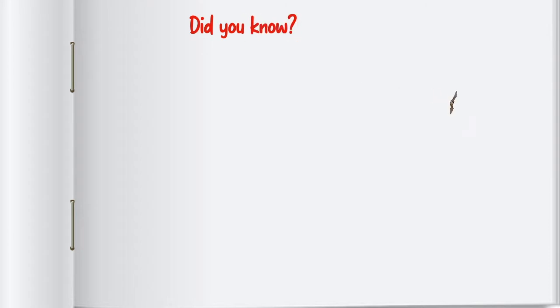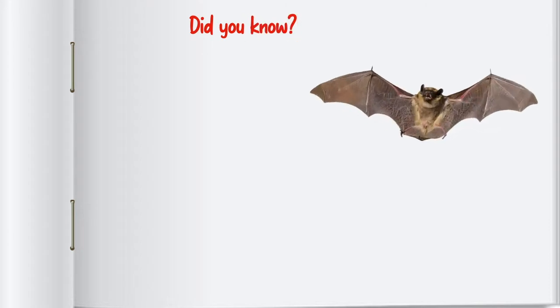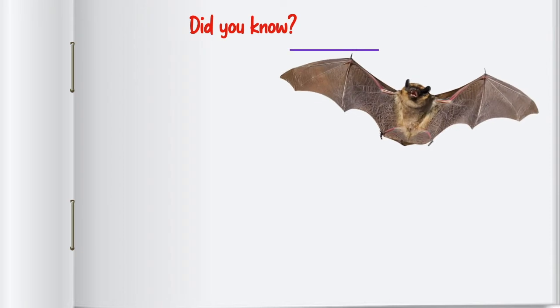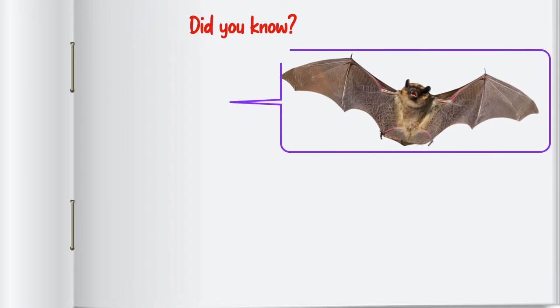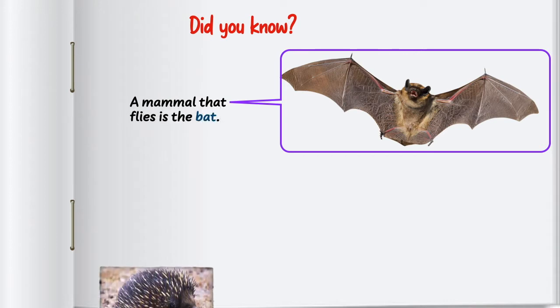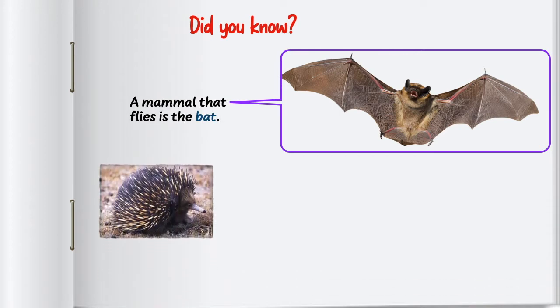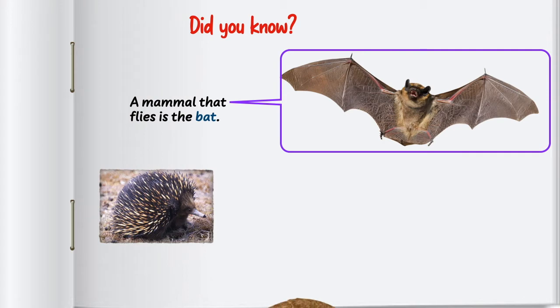Did you know? A mammal that flies is a bat. There are two mammals that lay eggs: one, the spiny anteater, and two, the duck-billed platypus. Now you know.